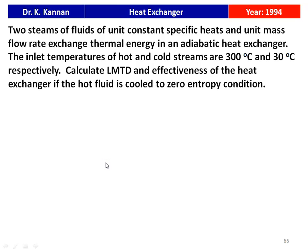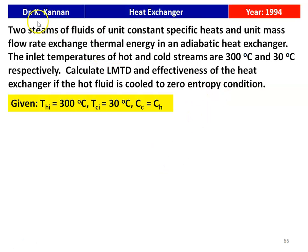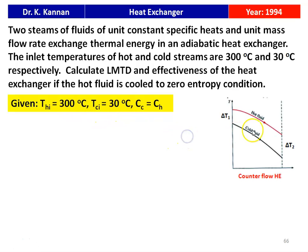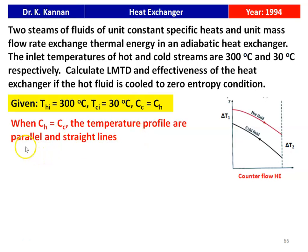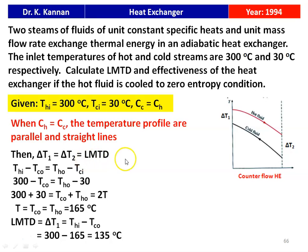The next question is from the 1994 question paper. Two streams of fluid with unit constant specific heat and unit mass flow rate exchange thermal energy in an adiabatic heat exchanger. The inlet temperatures of the hot and cold streams are 300°C and 30°C respectively. Calculate LMTD and effectiveness if the hot fluid is cooled to zero entropy conditions. Since CC = CH, this is a counter flow heat exchanger where the temperature profiles are parallel and straight lines, giving ΔT1 = ΔT2 = LMTD.